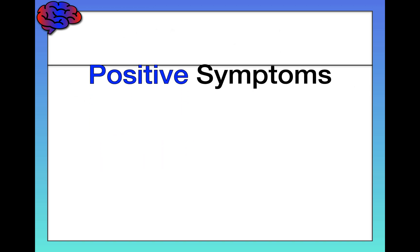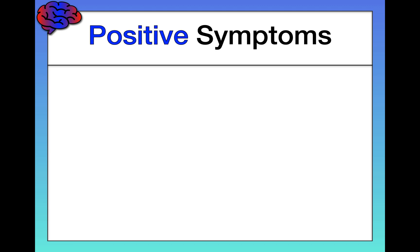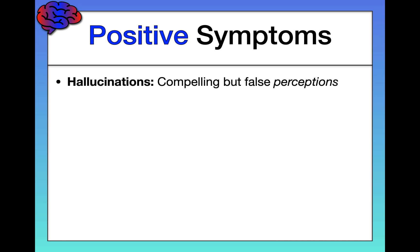So let's start by discussing those positive symptoms of schizophrenia. Number one, hallucinations. These are subjectively compelling but false perceptions. The person truly believes that they're seeing or hearing something. Hallucinations are typically auditory, meaning something they're hearing that isn't really there — at least two-thirds of the time — but they can be visual or olfactory, relating to smell, as well.